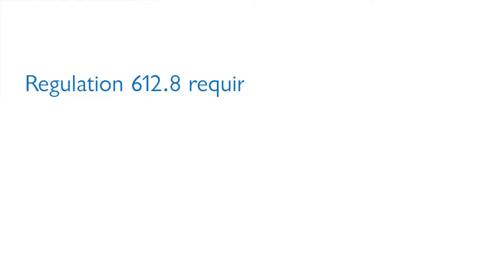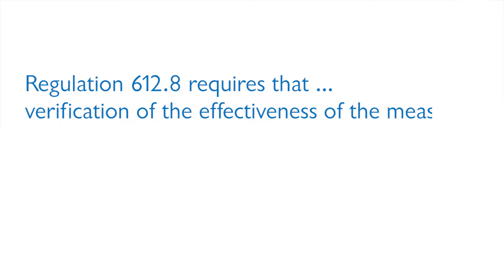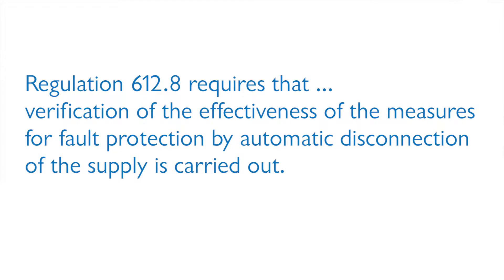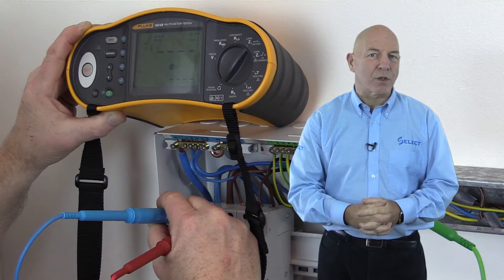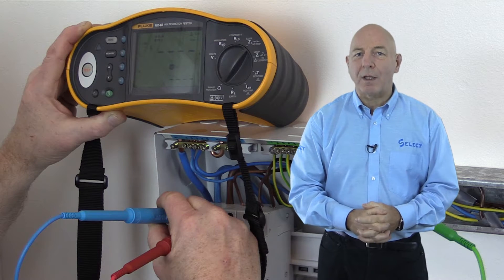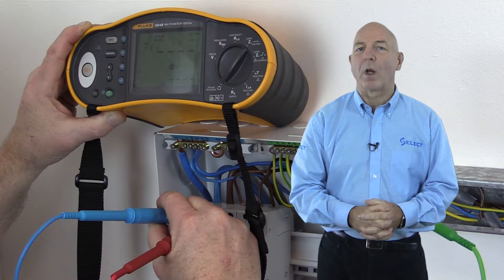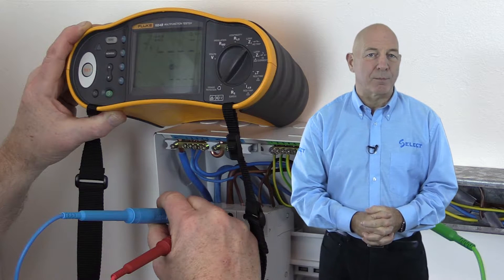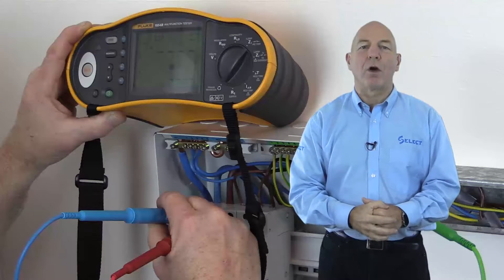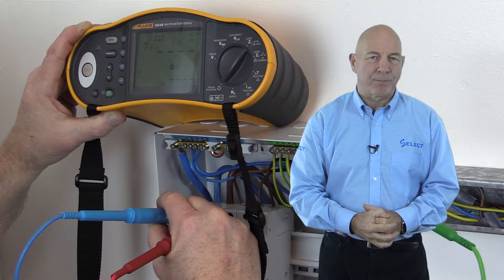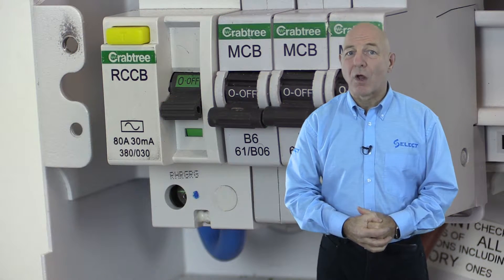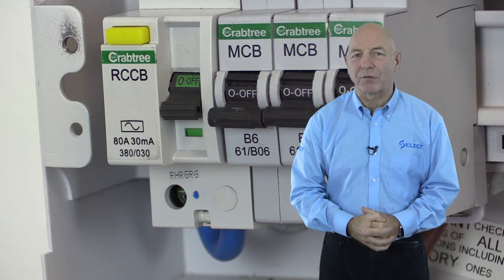Regulation 612.8 requires that verification of the effectiveness of the measures for fault protection by automatic disconnection of the supply is carried out. Regulation 612.8.1 requires that compliance with regulation 411.4 shall be verified for TN earthing systems by, firstly, measurement of the earth fault loop impedance, and secondly, verification of the characteristics and/or effectiveness of the associated protective device.